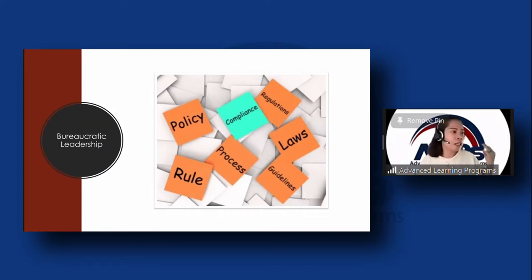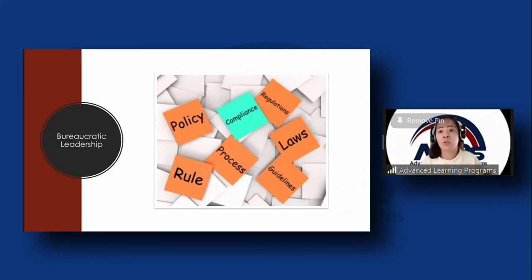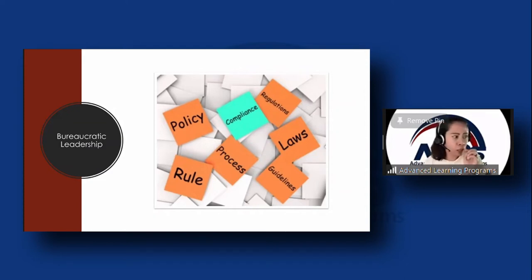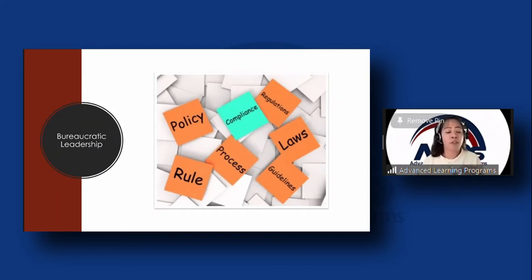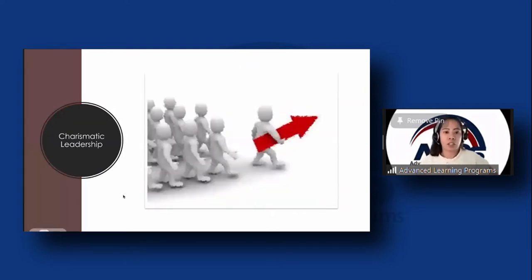Some examples of bureaucratic leaders include Steve Easterbrook, who is credited with making McDonald's famous; Shinji Sogo, a Japanese engineer who developed the bullet train in Japan; and Winston Churchill. These are some samples of bureaucratic leadership.